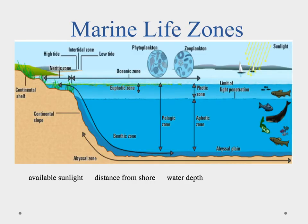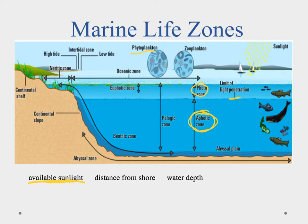We can divide the ocean into marine life zones using three different classifications. The first is available sunlight. We have two regions: the photic zone — from the surface down as far as light can penetrate — and the aphotic zone below that, where there's no sunlight and therefore no photosynthesis. The surface waters are called the euphotic zone, and this is where we see the bulk of photosynthesis occurring in the ocean. That's also where we would see phytoplankton, since light gets absorbed and scattered as it penetrates deeper.